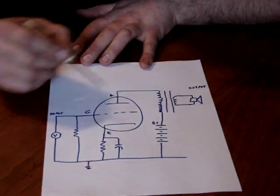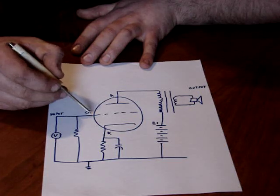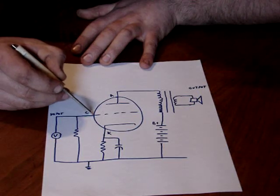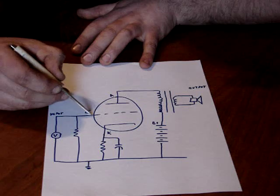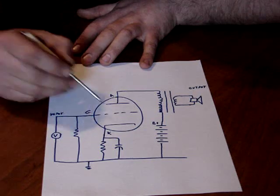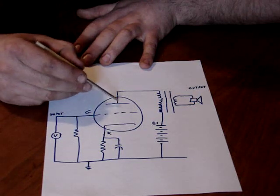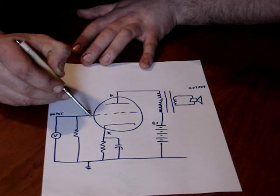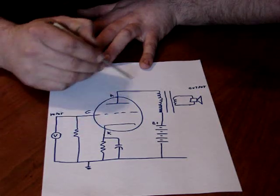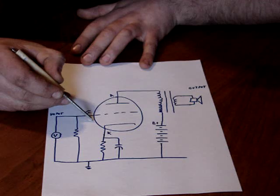Then as this gets lower than where it's biased, it's getting closer to cutoff. It's going more negative. The tube is biased above cutoff so it can conduct less as this goes down. So it will amplify this as it goes down. It will still pass that signal.